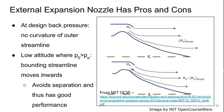This design has pros and cons. A couple of advantages are that at the design back pressure, there will be no curvature of the outer streamline — it will be perfectly straight because there is a matching of static pressure between the inside and the outside. The flow is all well behaved and attached everywhere. At low altitude, where the atmospheric pressure is greater than the exit pressure, this bounding streamline simply moves inwards. The stream tube area decreases due to the pressure difference but the flow follows this shape smoothly, the inner part of the flow is unaffected, there is no separation, and therefore we still get very good performance at low altitudes.